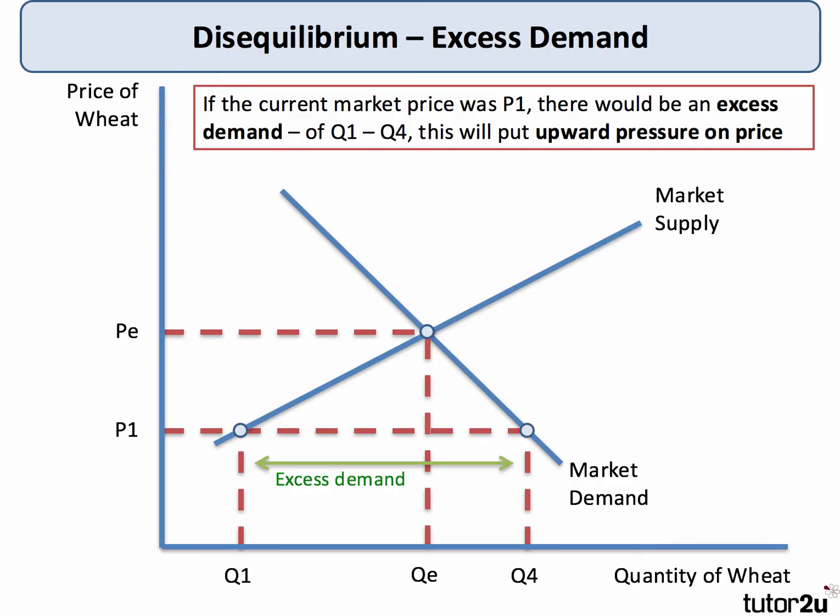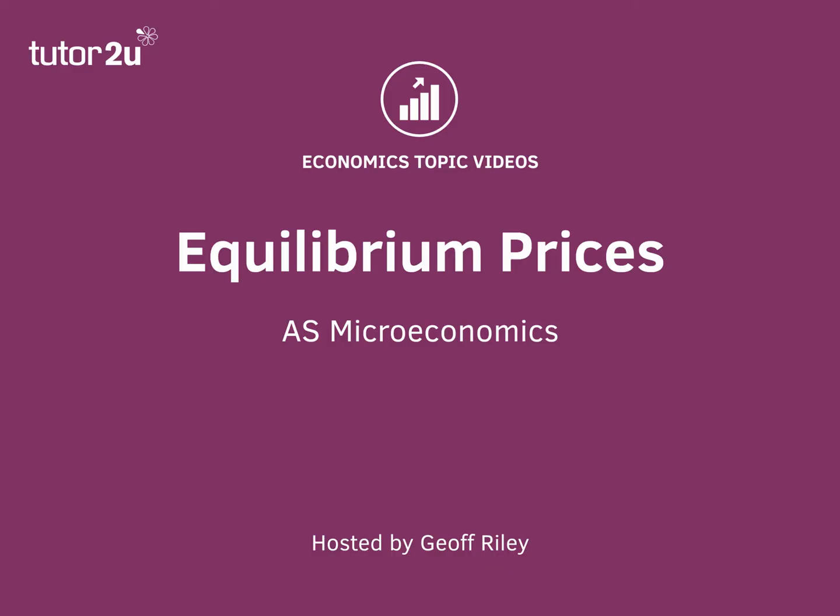Quantity supplied will be down at Q1, and the gap from Q1 to Q4 represents the excess demand in the market. When prices are below the equilibrium there is excess demand and upward pressure on the price to rise. That's a brief introduction to equilibrium prices.